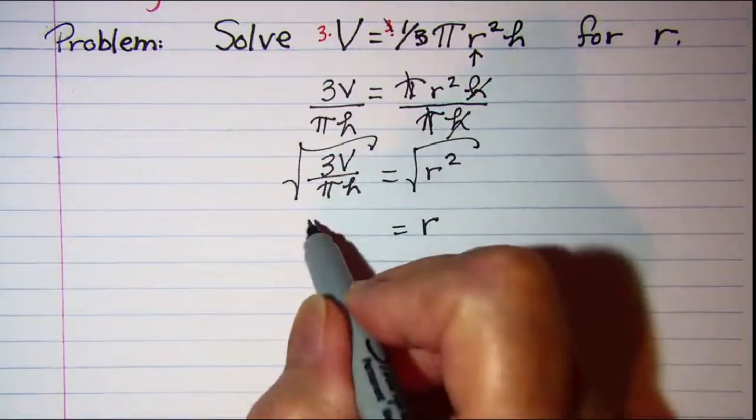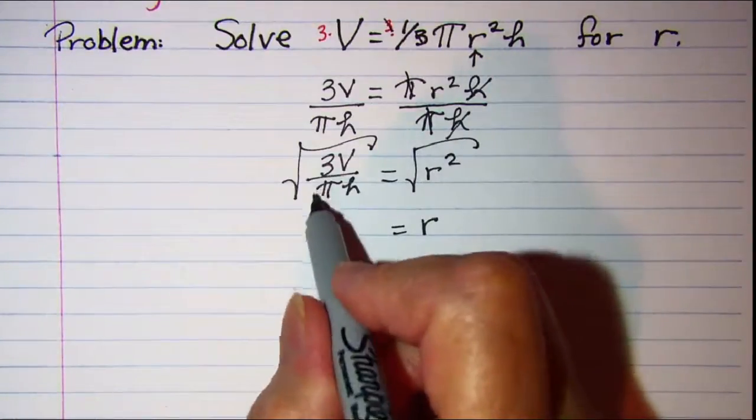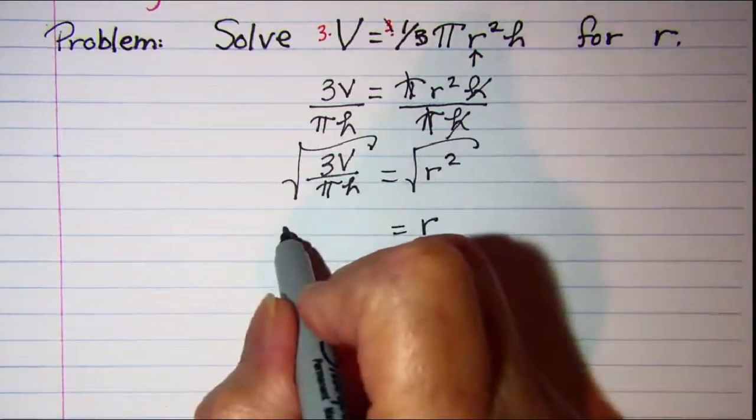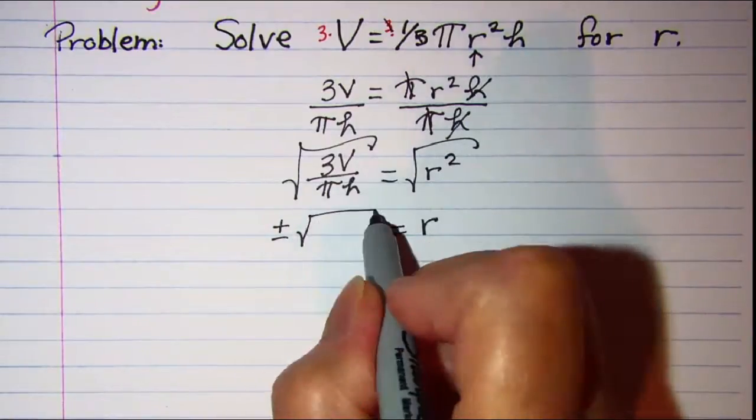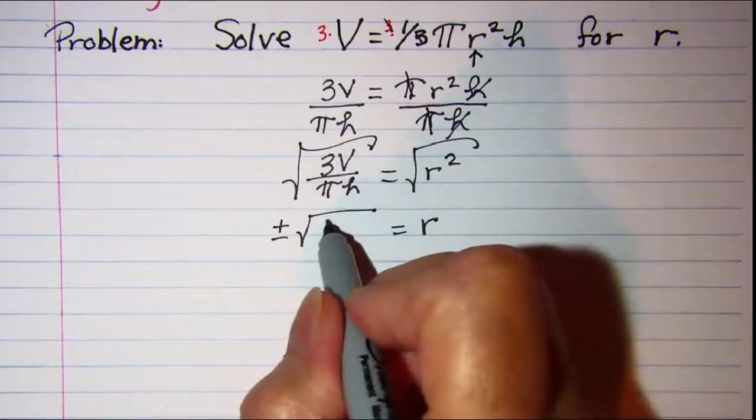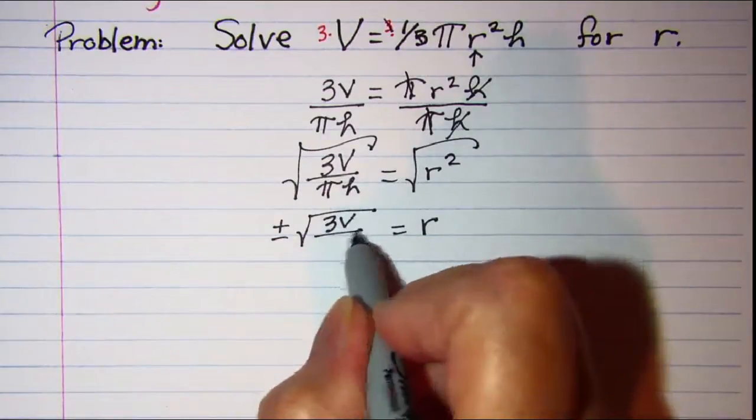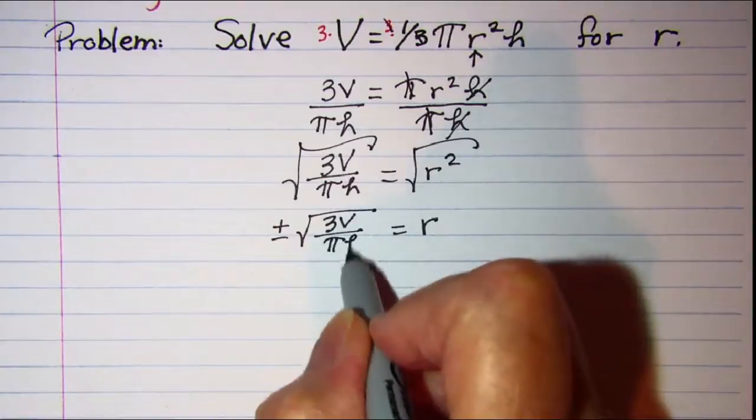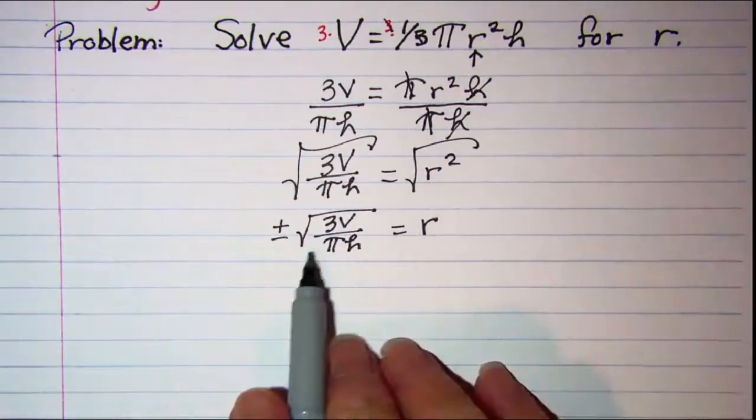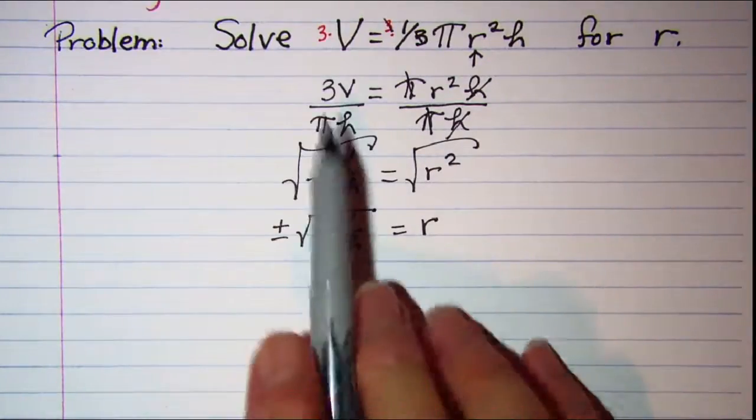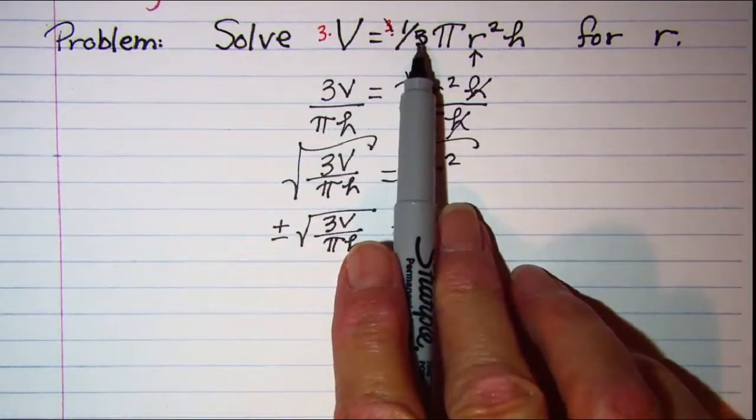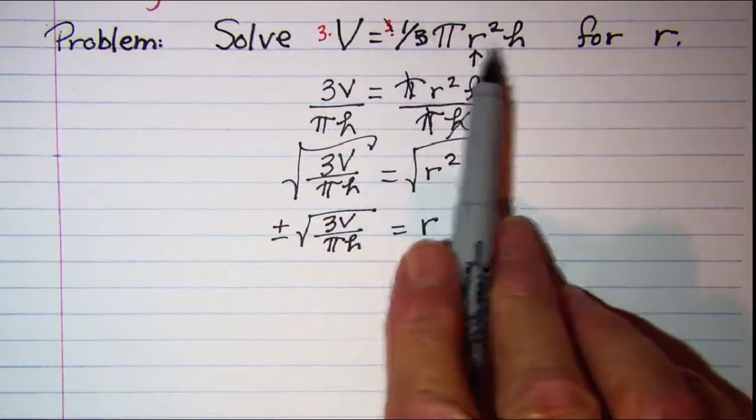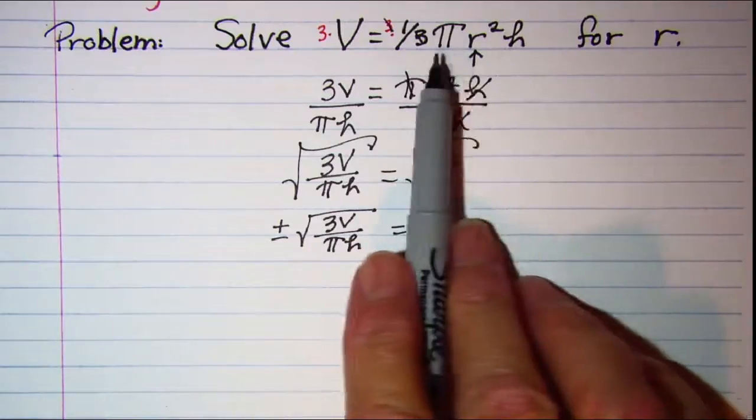On the left side the square root property says that I should have plus or minus on the square root, so I'll write that but then notice that this is actually the volume of a cone. One-third pi r squared h is the formula for volume of a cone.